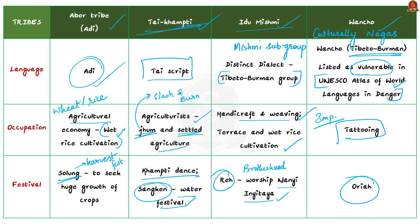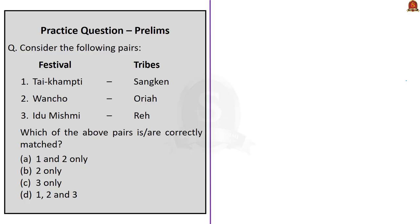Today we saw about a proposed legislation that aims to make changes to the scheduled tribes list of Arunachal Pradesh, and we saw about four important tribes: the Abhor tribe, Thai Kamti tribe, Idumishmi tribe, and Wancho tribe. Now let us move on to the next discussion.